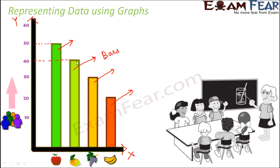Similarly, the height of the second bar says 40, meaning 40 students like mango. The height of the third bar is 30, which says that 30 students like grapes and so on.